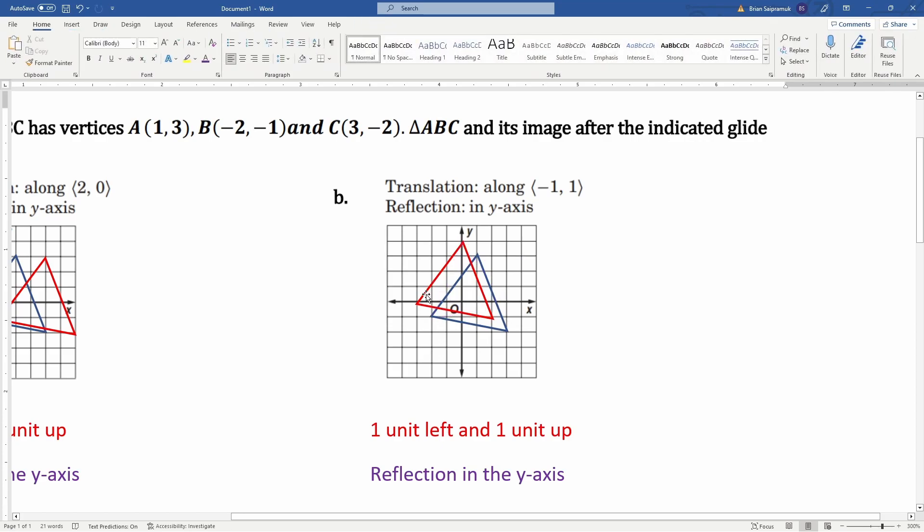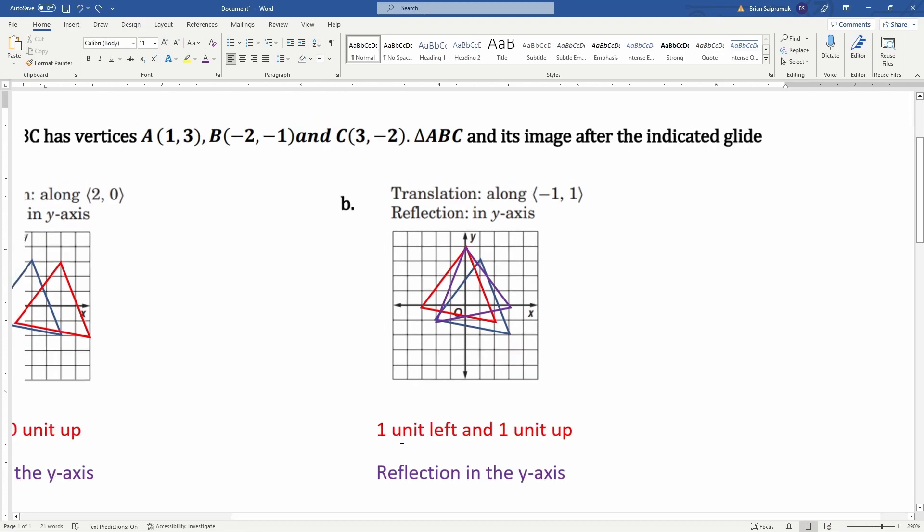So this is the original, then we went one unit left, one unit up, so that is red. Then we reflect it, which is that purple. This purple is how it looks like after the translation and the reflection. I'm going to have all three up so you can see it. There you go.